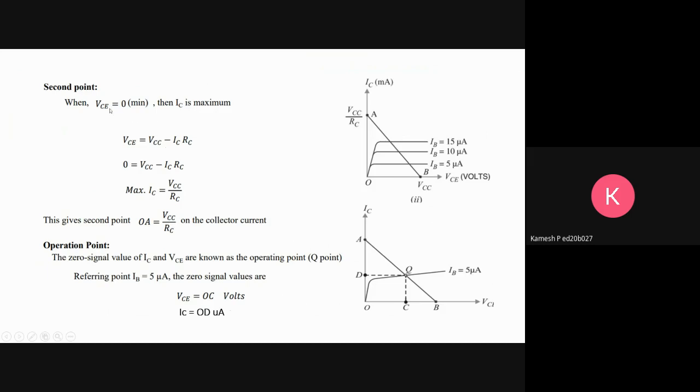For the second point, we take VCE equal to zero. For finding IC, VCC goes to the other side, so the maximum IC is equal to VCC by RC. That is the maximum IC point.